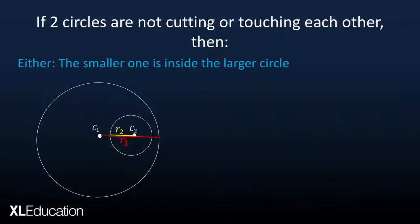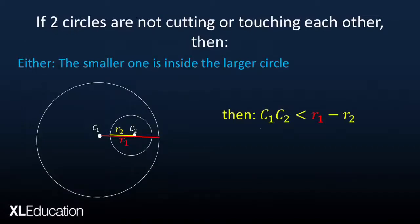The third scenario is when two circles are not cutting or touching each other. Here one option is the smaller circle is inside the larger circle. The center of the bigger circle is C1 and the center of the smaller circle is C2. In this situation, the distance between the two centers must be less than the difference of the two radii — that is, radius 1 minus radius 2 must be greater than the distance from center 1 to center 2.